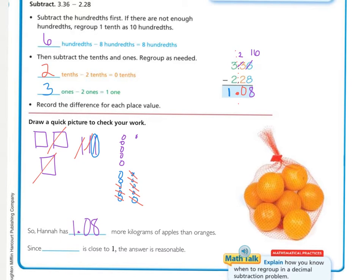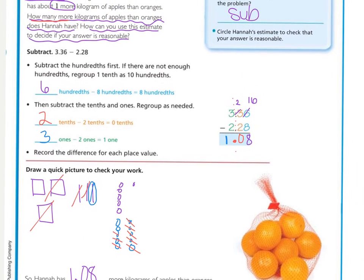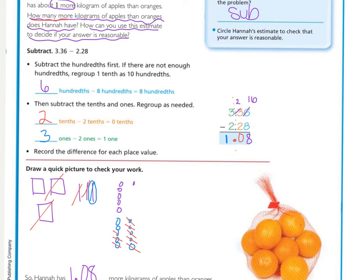So Hannah has one and eight hundredths more kilograms of apples than oranges. That answered our first question of how many more kilograms of apples than oranges does Hannah have.